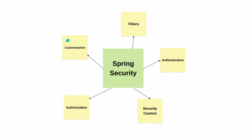Lastly, Spring Security allows us to customize the security filters, authentication providers, and access rules according to our application's needs. We can configure which URLs need authentication, what roles are required, and so on. Although this may all seem overwhelming at the moment, please don't worry — we'll learn everything step by step in this video series.